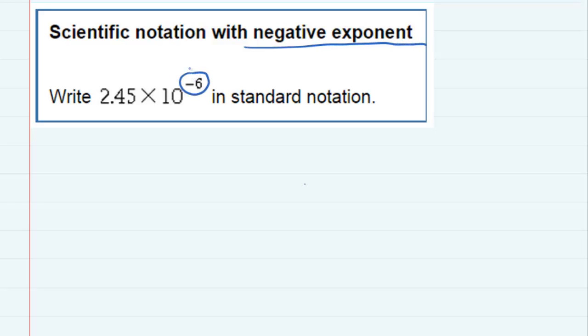There's my negative exponent, and that tells me that this is a very small number. And it also tells me how many times the decimal needs to be moved. It needs to be moved six times in order to put it in standard notation.